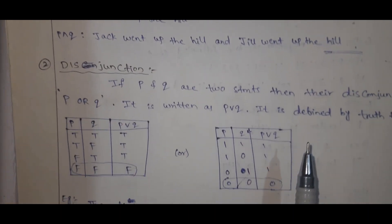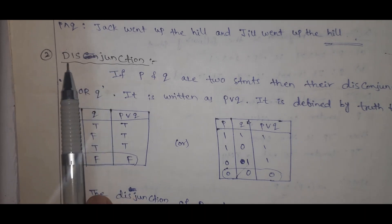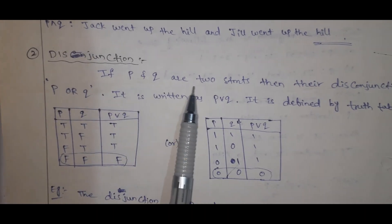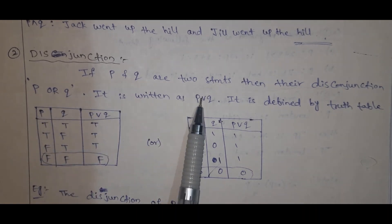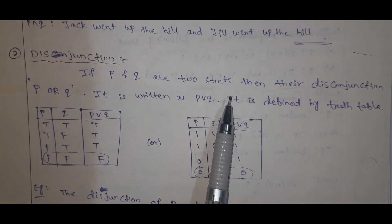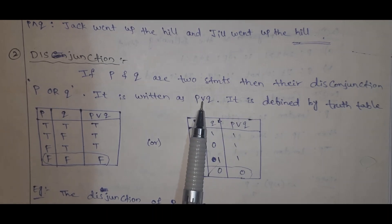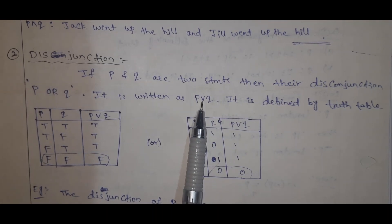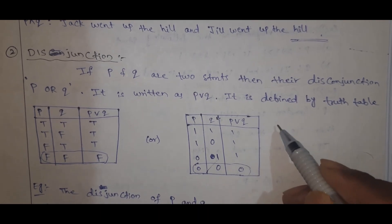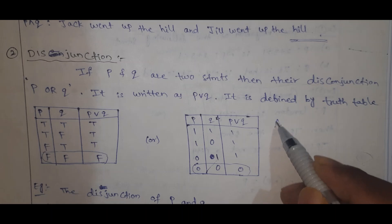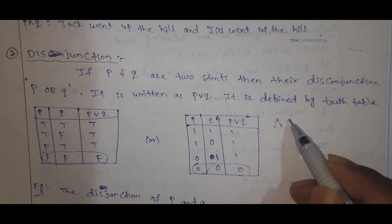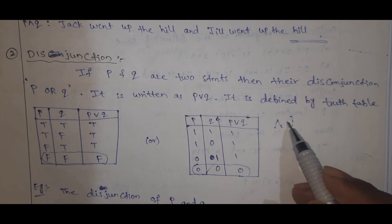Next is disjunction. Conjunction versus disjunction — if P and Q are two statements, then their disjunction is P OR Q, written using the ∨ symbol (a V-like symbol). It is written as OR.